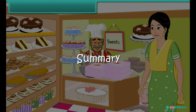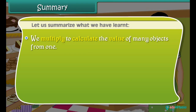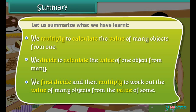Let us summarize what we have learnt. We multiply to calculate the value of many objects from one. We divide to calculate the value of one object from many. We first divide and then multiply to work out the value of many objects from the value of some.